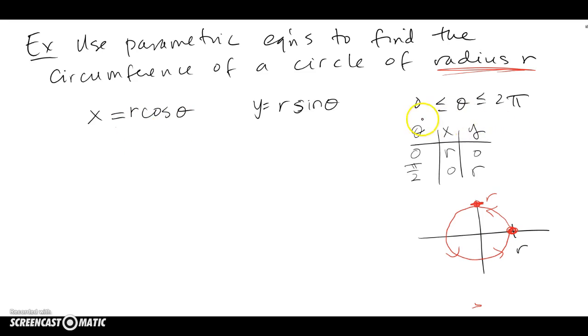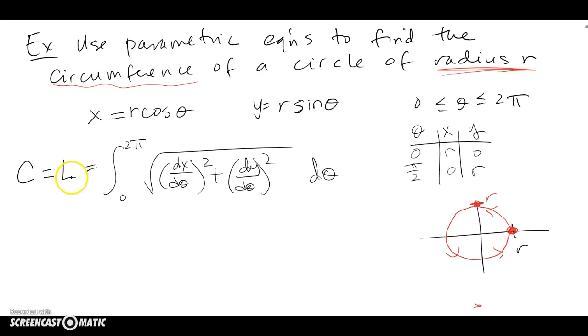And we're going to now try to find the circumference of this circle. So we're going to go 0 to 2π to find the arc length basically, and I have to find dx/dθ and dy/dθ.